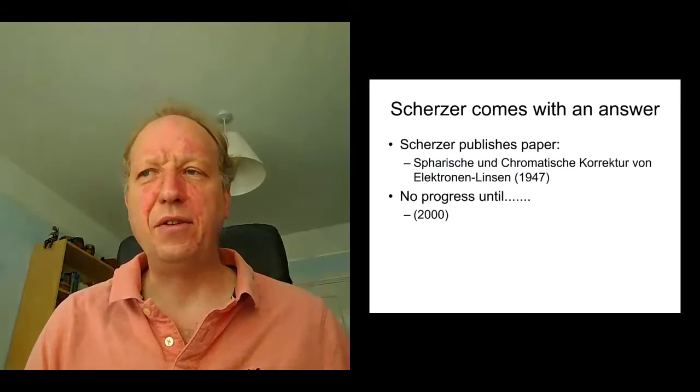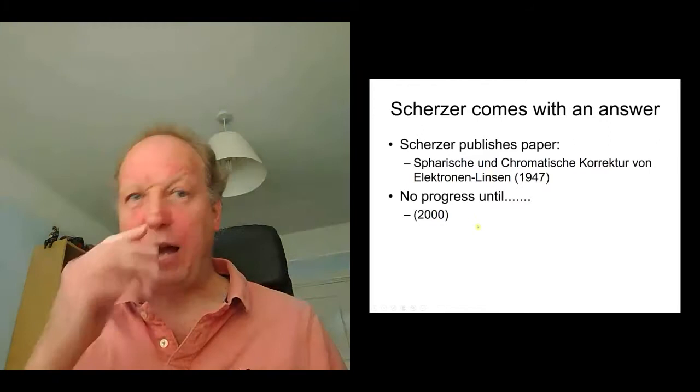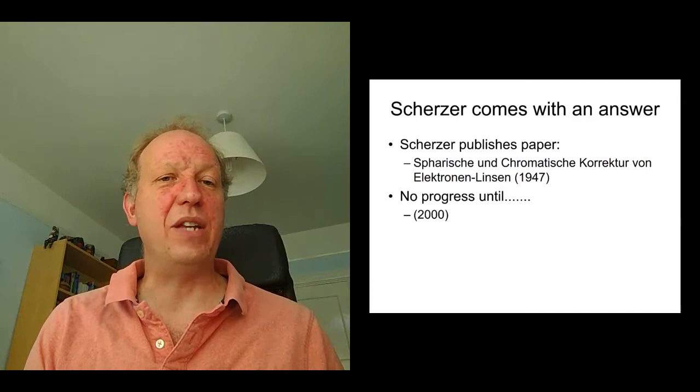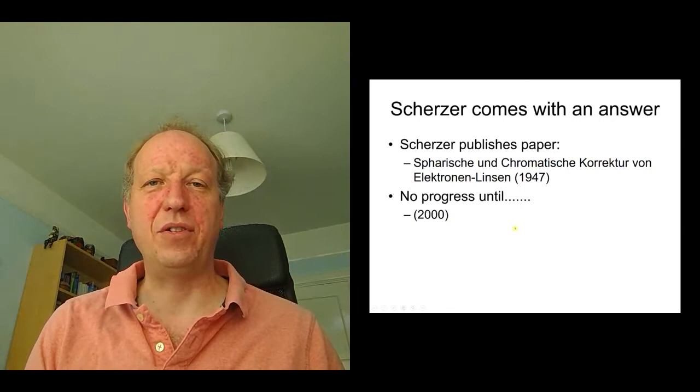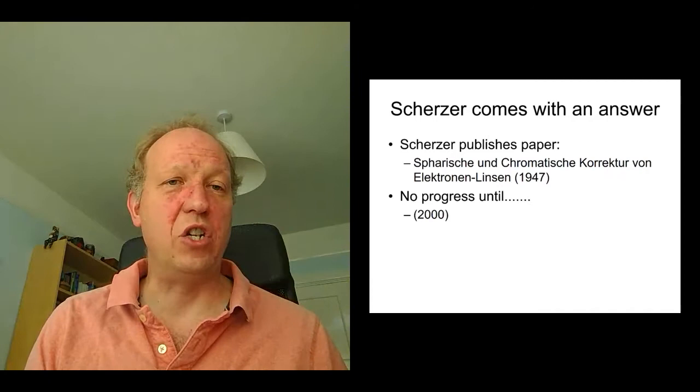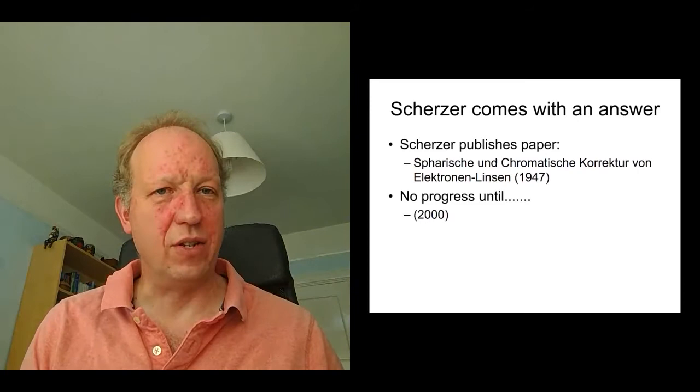But Scherzer actually came up with an answer to these very bad lenses in the electron microscope. He published this in Germany in 1947 on how to fix these bad aberrations of these lenses, these poor quality lenses. And people tried it lots of times in the subsequent years, and there really wasn't any progress until about 2000 or so, where a couple of efforts, one in the USA, in Seattle, a company called Nion, which in fact I spent four years working with from 2000 to 2004, and another one in Germany called CEOS, were able to successfully develop correctors for these bad aberrations of electron lenses.